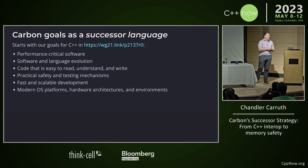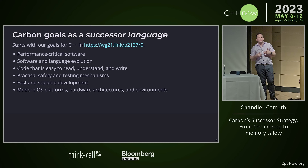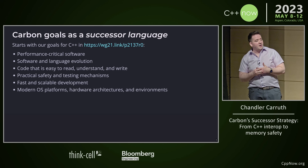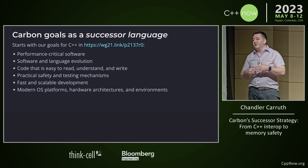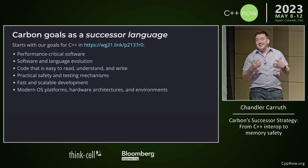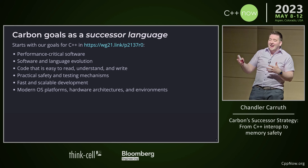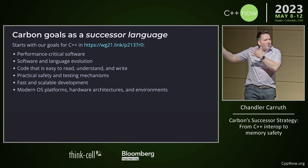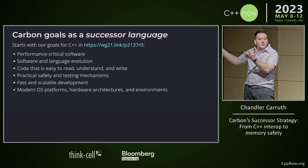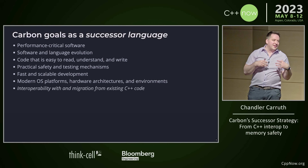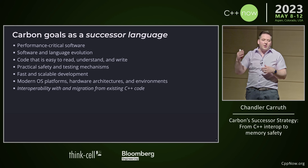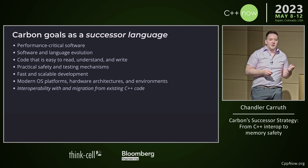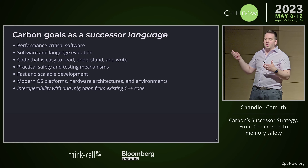We have some goals that we're using to pin this down. The original goals we started with were the goals we had for C++ itself: performance-critical software, software and language evolution, code that's easy to read, understand, and write, practical safety and testing tools, fast and scalable development, and modern operating systems. When we start talking about successor language, we have to add interoperability with and migration from existing C++ code. These goals form the basis of the Carbon experiment.